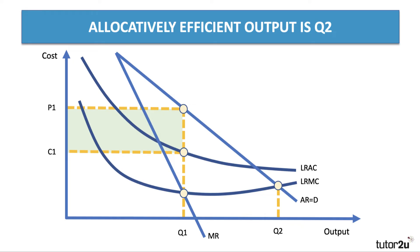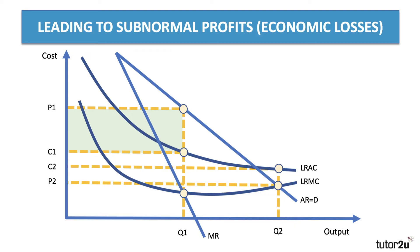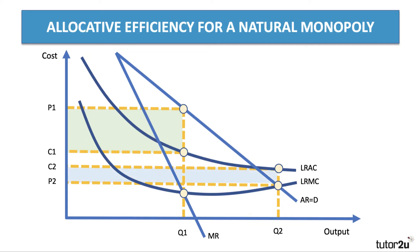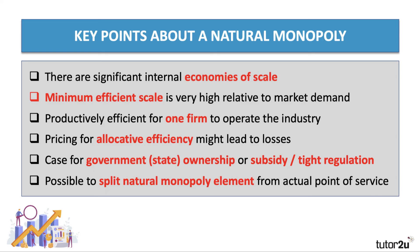Lower prices and higher output mean much higher consumer surplus — but here's the catch. If we charge price P2, that price is lower than the unit cost of production C2. So charging an allocatively efficient price would lead to subnormal profits or economic losses, shown by the shaded area. This is a really key diagram: a natural monopoly with falling LRAC and potentially high profits at high prices, but low prices could lead to losses. If a state-owned natural monopoly must price at marginal cost, this can lead to large losses since price will be below average cost.